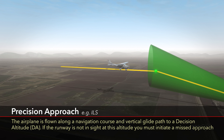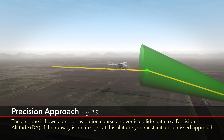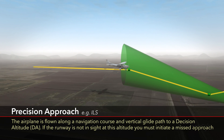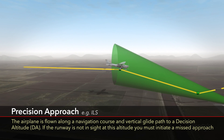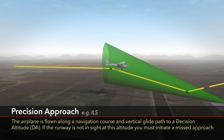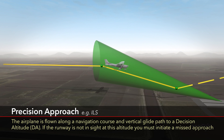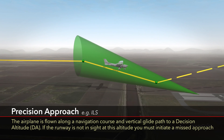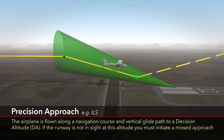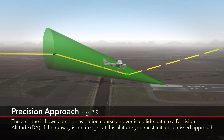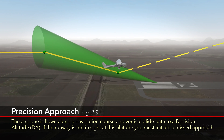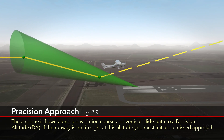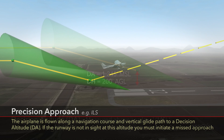On precision approaches, the airplane intercepts and follows the glide slope to an MSL altitude called the decision altitude, or DA. If the runway environment is not in sight at the DA, the missed approach comes next.